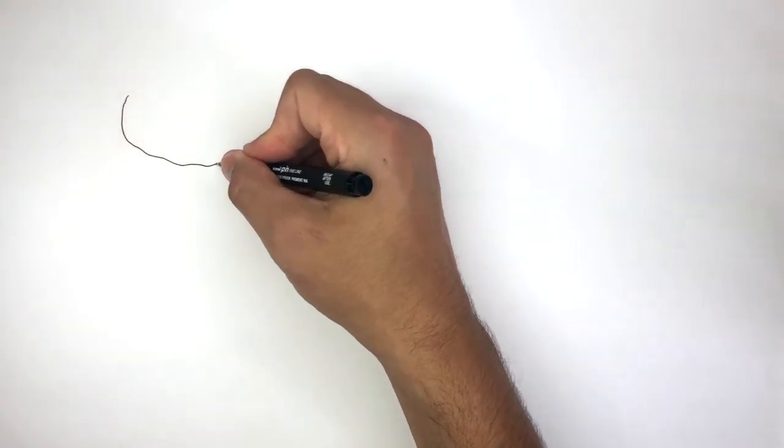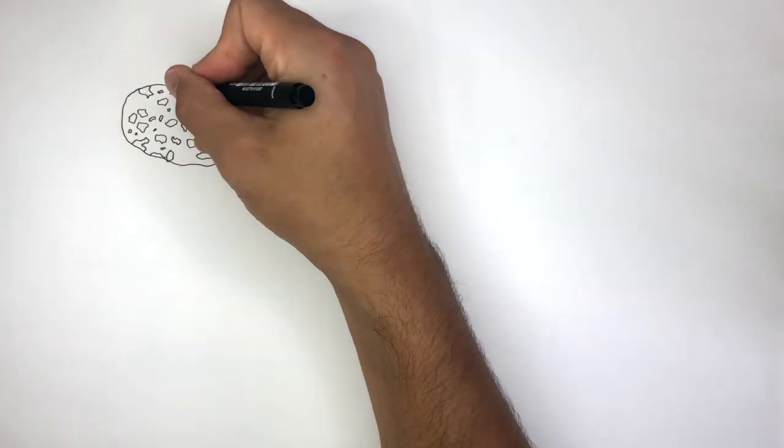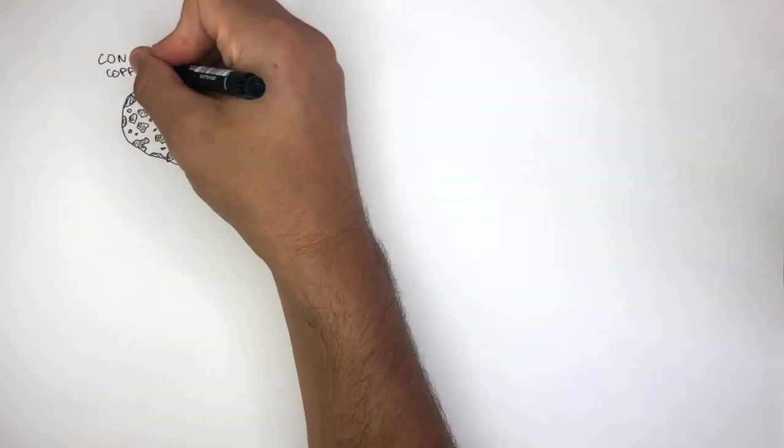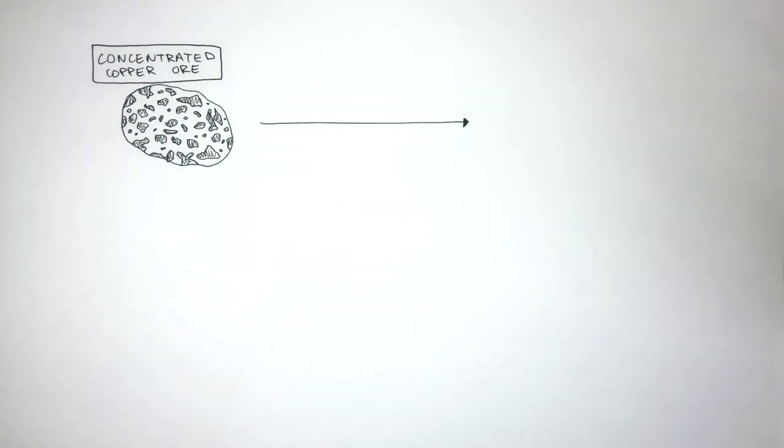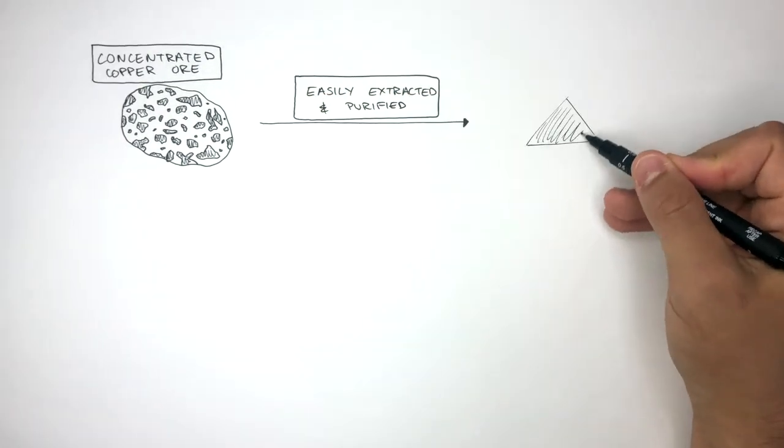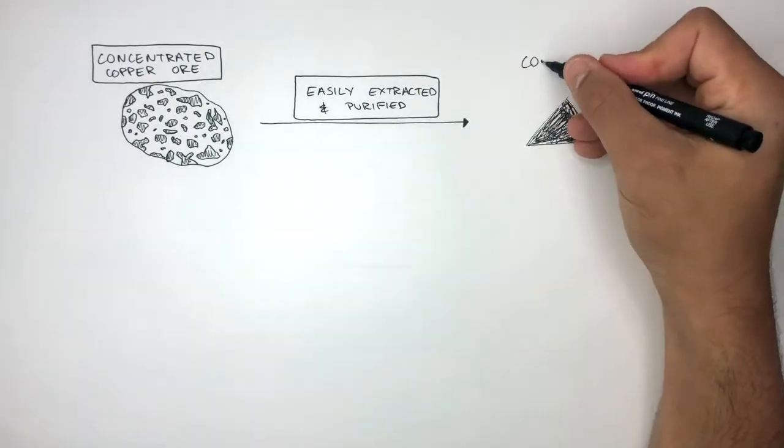This diagram represents an ore which is concentrated with a lot of copper. Because this is a concentrated copper ore, therefore the copper is easily extracted and purified. This represents the easily extracted copper compound.